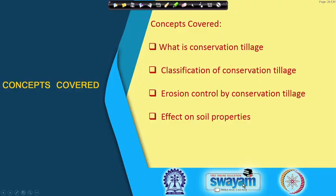Now, regarding conservation tillage, we will discuss different types practiced in various countries including India, and show trends of how they affect soil properties. The concepts covered are: what is conservation tillage, classification of conservation tillage, erosion control by conservation tillage, and the effect on different soil properties. Conservation tillage is one important way of preventing soil erosion and is gaining wide attention from environmental agencies worldwide.